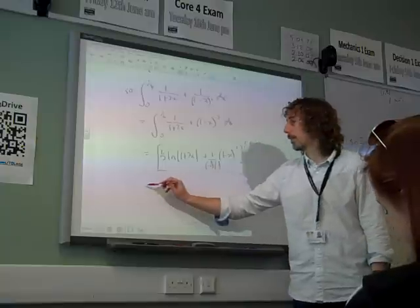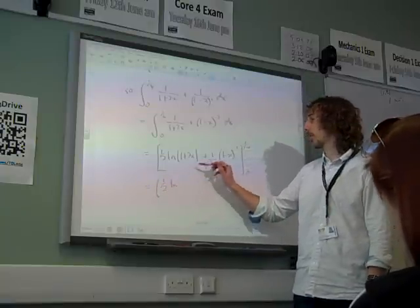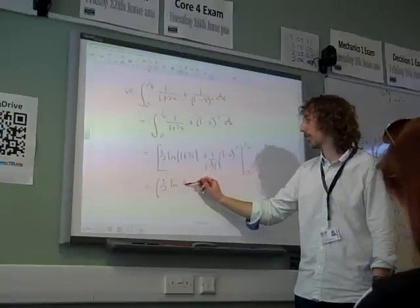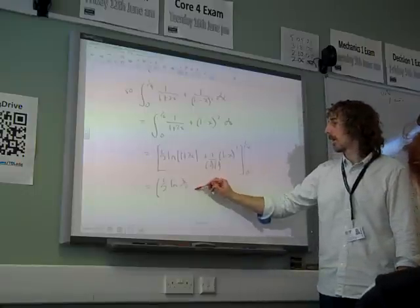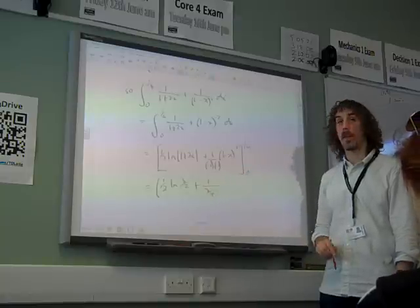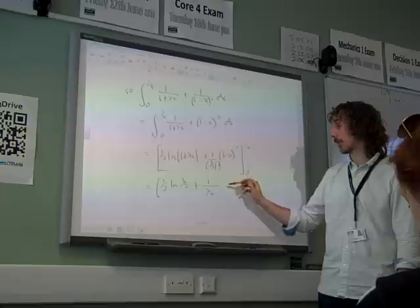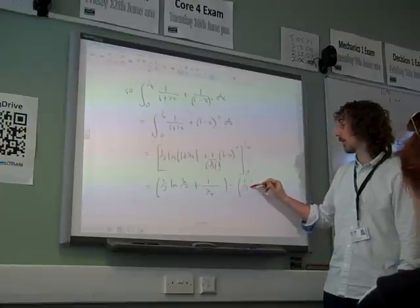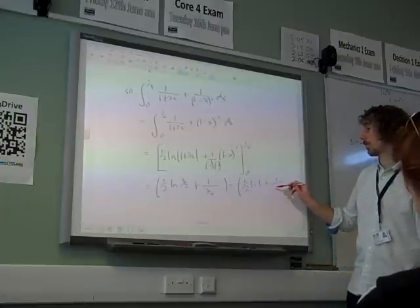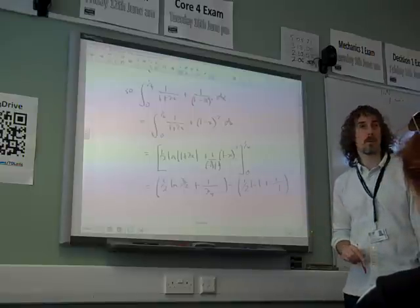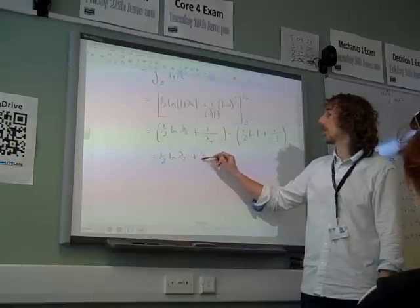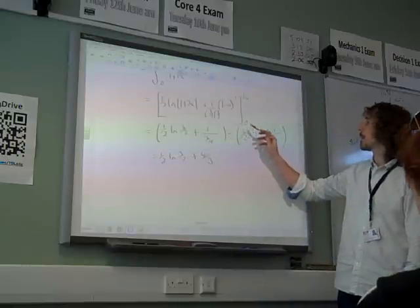Now we're going to sub in those limits. So we're going to do a half the natural log of 1 plus a quarter times 2, that's 3 over 2, isn't it? And this is 1 over 1 minus x. So I think that's 1 over 3 quarters. And it's plus, because that all cancels out. Take away a half ln 1. Well, that's alright, because that's 0. Plus 1 over 1 minus 0. And so we end up with 1 half natural log of 3 over 2 plus 4 thirds, because that's 1 over 3 quarters, take away 1.